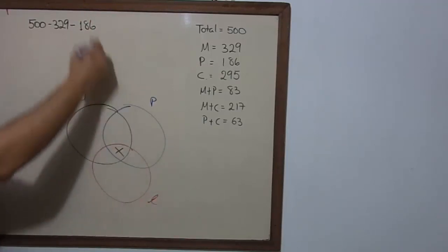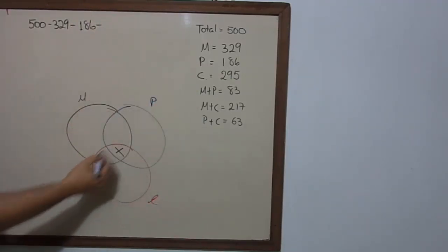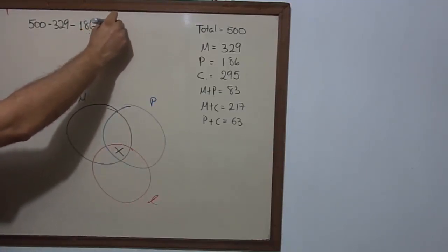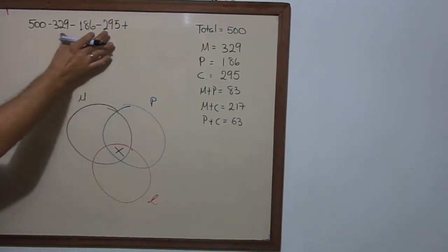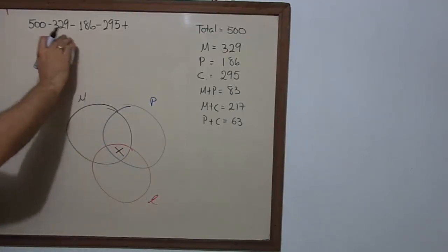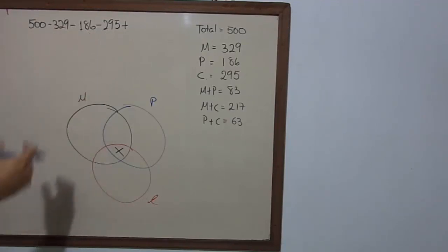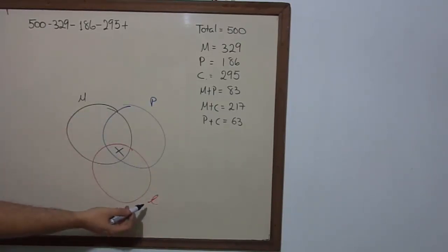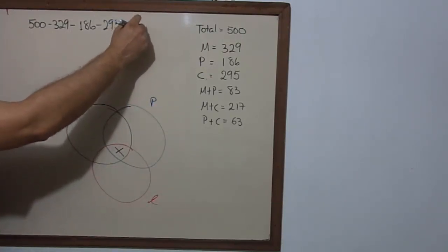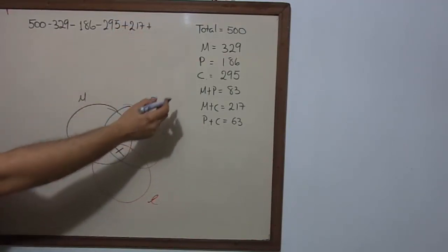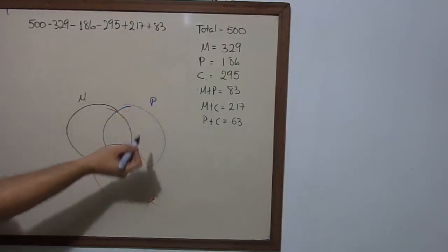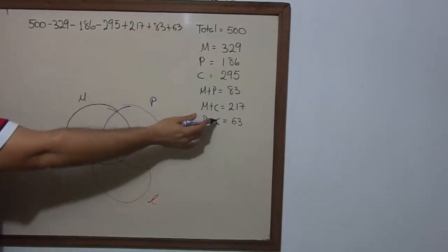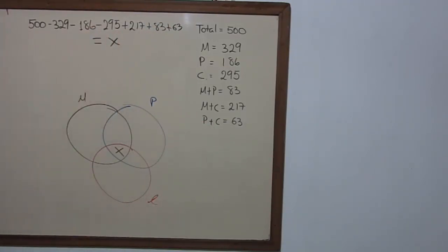...minus 186 which is the blue set, minus the red set which is 295. And to revert the effect of subtracting three times x, we're going to add the pairwise intersections: math and chemistry 217, plus 83 which is math and physics, plus 63 which is physics and chemistry. And you get x as the result. So we do this operation and you get x equals 53.